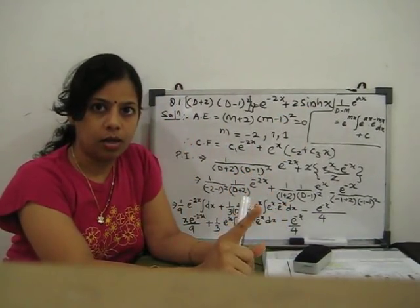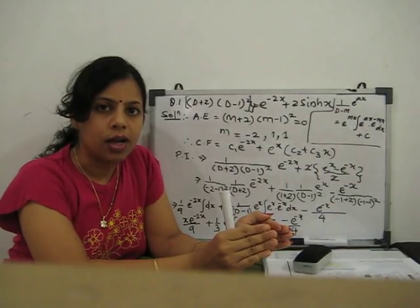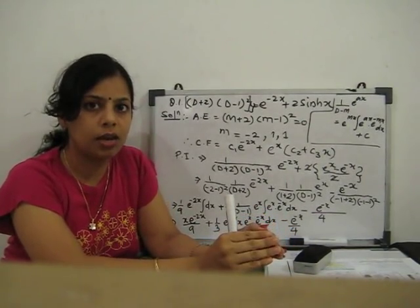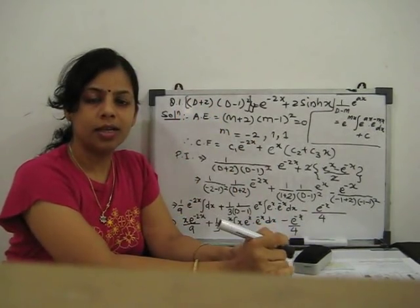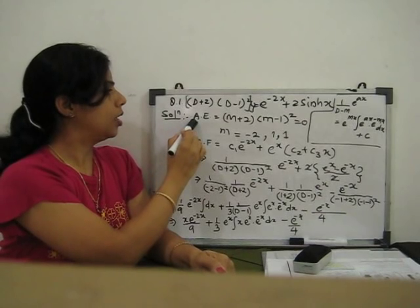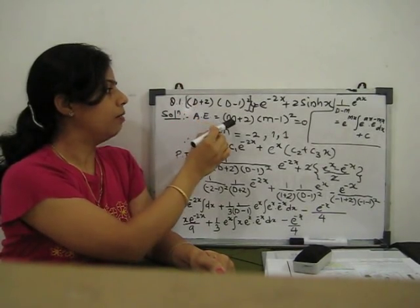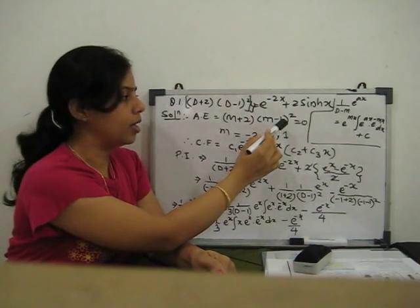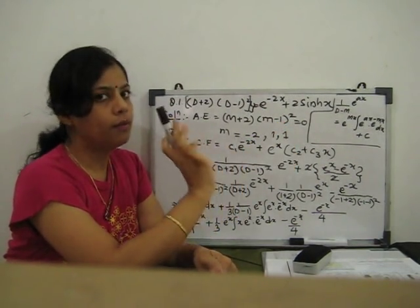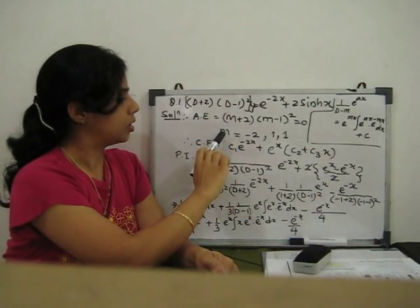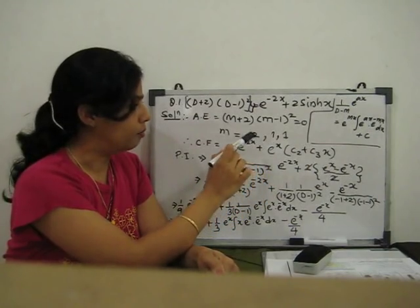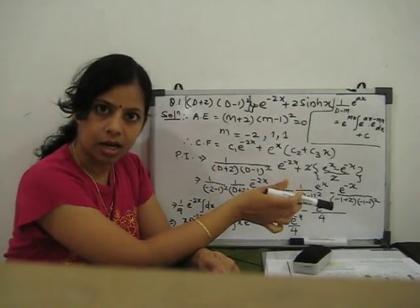Step 1: First we have to find the complementary function CF. For CF, we write the auxiliary equation for the left-hand side — replace D with m. So (m + 2)(m − 1)² = 0. Finding the roots: roots are m = −2, 1, 1. All roots are real.